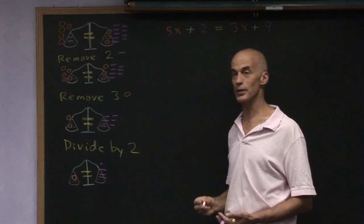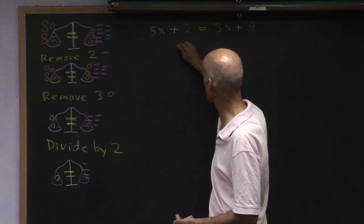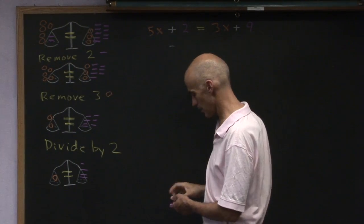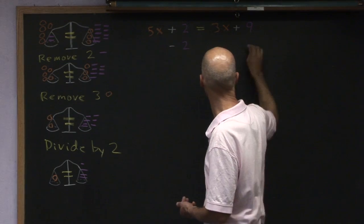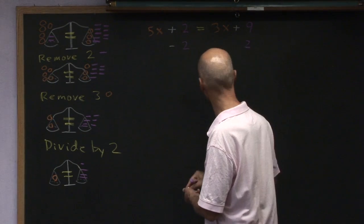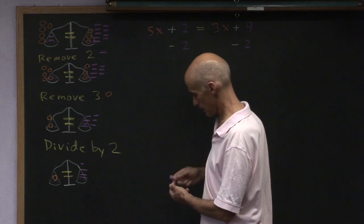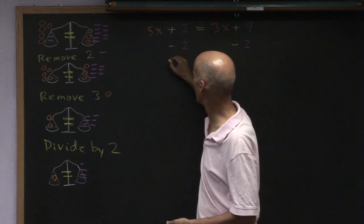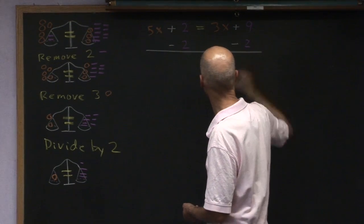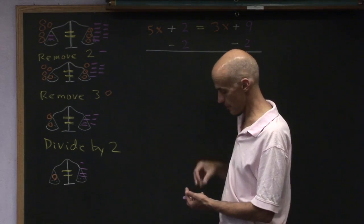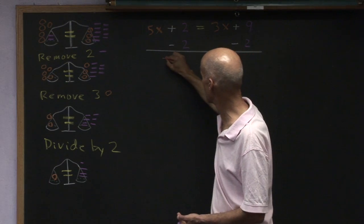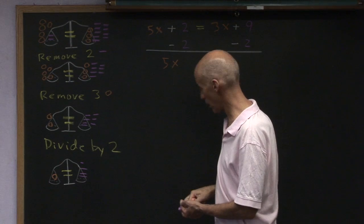And what did I do in the next step? Well, it says it right here, I removed two hex nuts. So I subtracted two of those hex nuts from each side. And what happened when we did that? I removed two hex nuts from each side and I'm then left with this as the equation.